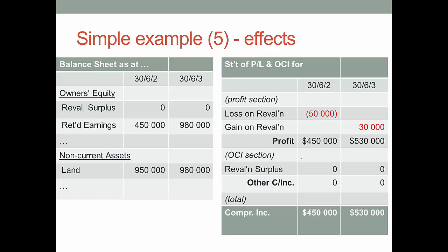Let's look at the effect on the balance sheet and statement of comprehensive income. When we hit it with $50,000 in the first year, there was a loss on revaluation of $50,000 and retained earnings took that hit. In the second year when we reversed that revaluation, since the original revaluation went into profit, the reversal's got to go into profit. So we put the gain on revaluation in profit, which increases profit. Notice nothing is going on in revaluation surplus - we're simply reversing an effect that went to profit. And the land is updated.